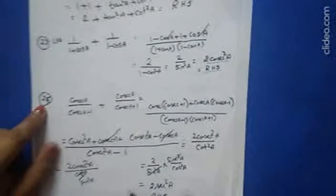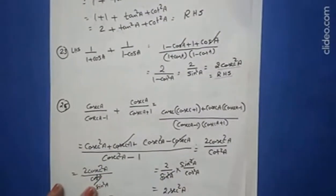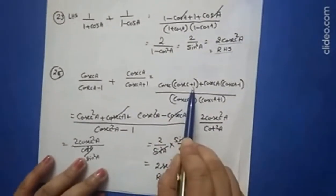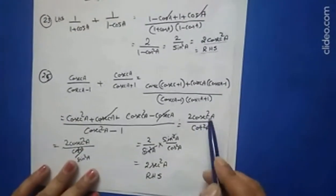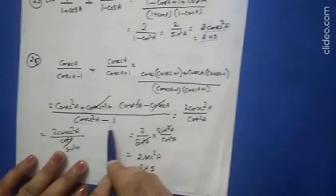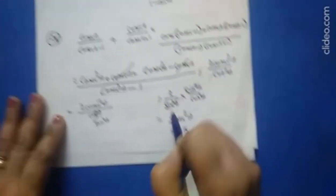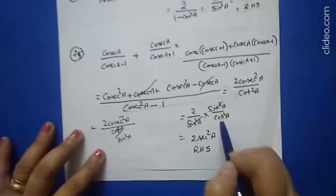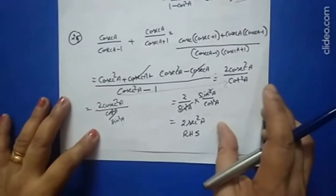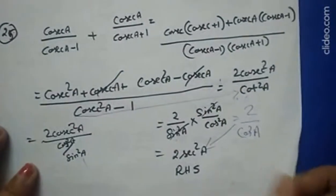Question 24 is your homework. Question 25: cosec a/(cosec a − 1) + cosec a/(cosec a + 1). Take LCM directly: you get cosec a·(cosec a + 1) + cosec a·(cosec a − 1) all over cosec²a − 1. Multiply out and simplify: 2cosec²a/(cosec²a − 1). Since cosec²a = 1/sin²a and cosec²a − 1 = cot²a = cos²a/sin²a, sin²a cancels and you get 2/cos²a = 2sec²a, which is the right hand side.